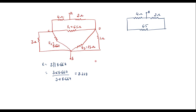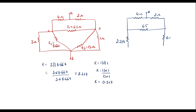Similarly, 13 and 1 in parallel = (13 × 1) / (13 + 1) = 0.928 ohm. Replacing these parallel combinations gives 2.228 and 0.928, both connected to node B. In the reduced circuit, 6.5, 2.228, and 0.928 are now connected in delta fashion between nodes C and D.